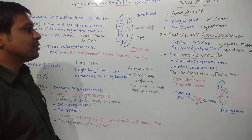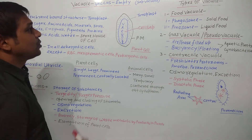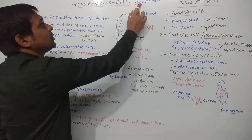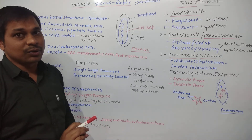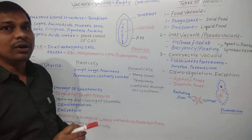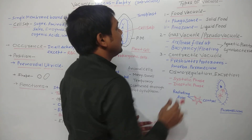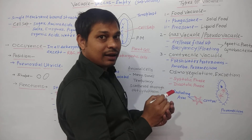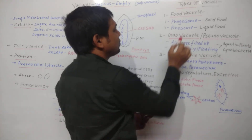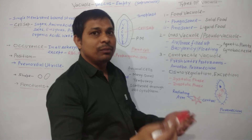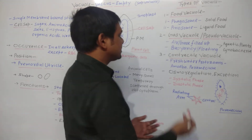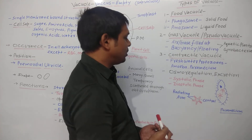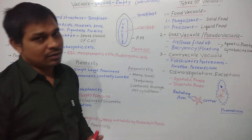Vacuoles also help in the elongation of plant cells. To summarize: when we talk about the vacuole in general, we mean the sap vacuole. When vacuoles store food, they are food vacuoles. If they store air or gas, they are gas vacuoles or pseudo vacuoles. And if they perform functions like osmoregulation and excretion, they are considered contractile vacuoles.